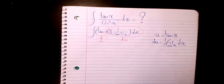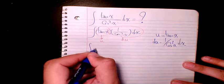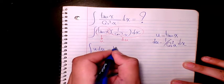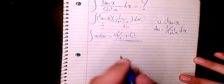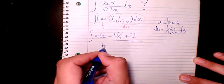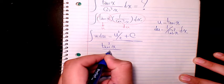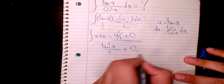So it will be u du. After integration is going to be u squared divided by 2 plus c. So u is tan x, so it's gonna be tan squared x divided by 2 plus c. That's the final answer.